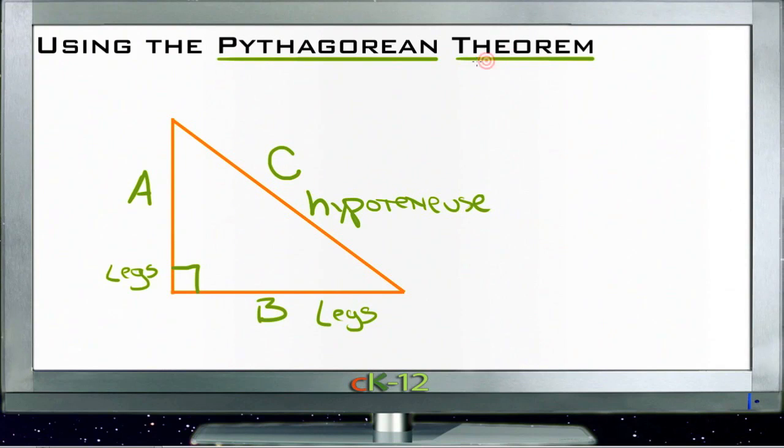In math language, that's A squared plus B squared equals C squared.